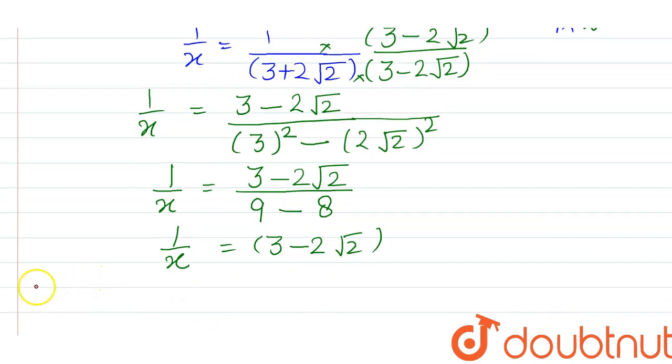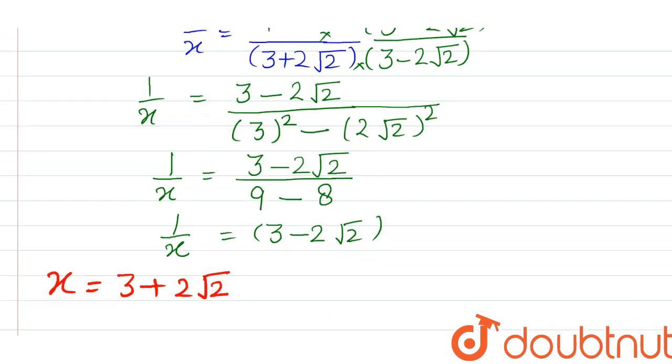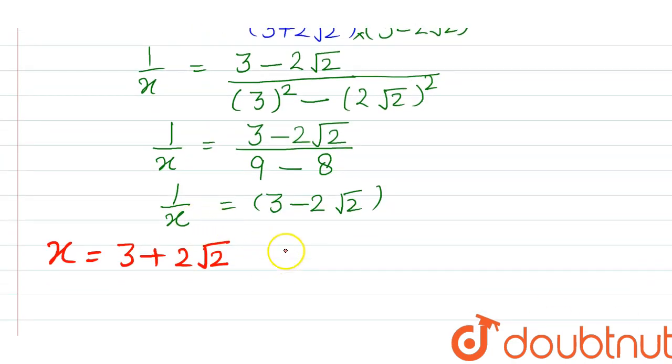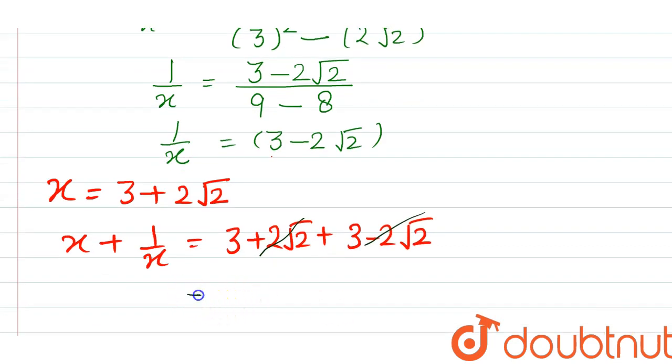Now in the question, x was given as 3 plus 2 root 2, and 1 upon x we have calculated as 3 minus 2 root 2. So now let's write the value of x plus 1 upon x. x is 3 plus 2 root 2, and 1 upon x is 3 minus 2 root 2. So clearly here, 2 root 2 and minus 2 root 2 will cancel each other. So finally we are getting the value of x plus 1 upon x as 6. So clearly it is a rational number, which was asked in the question.